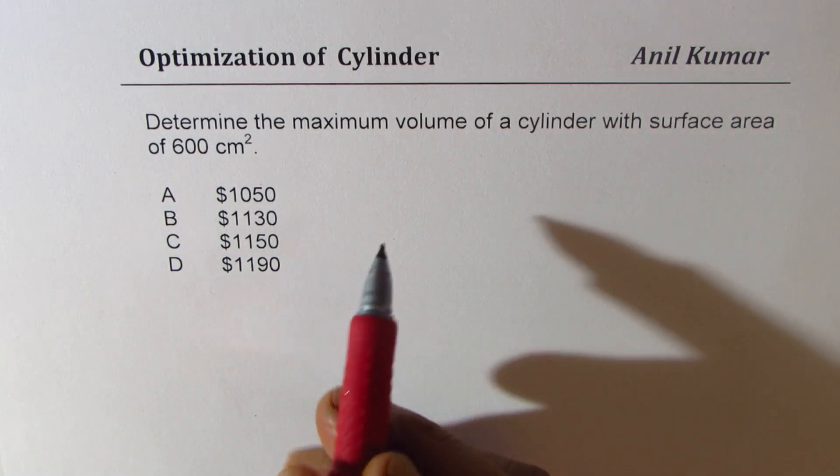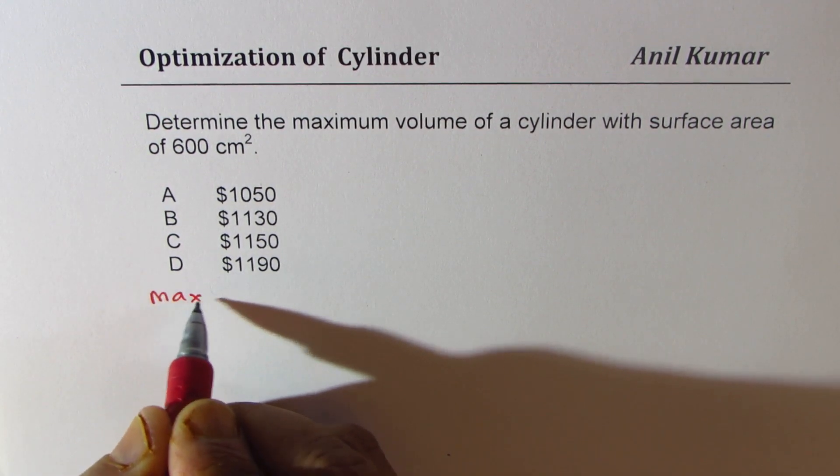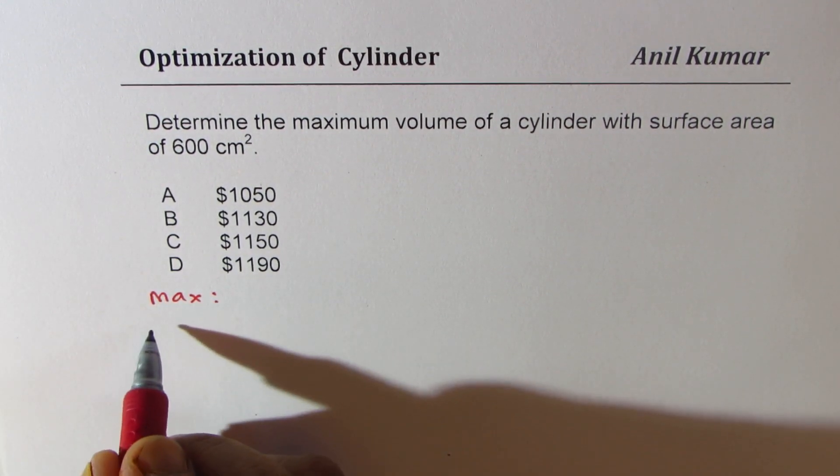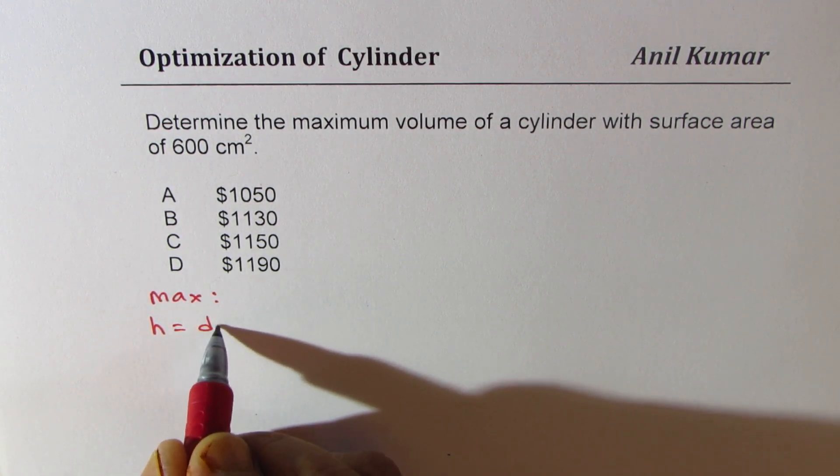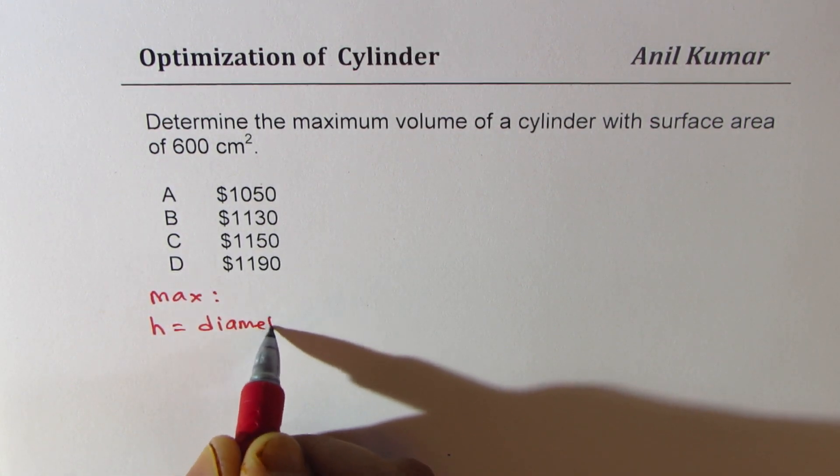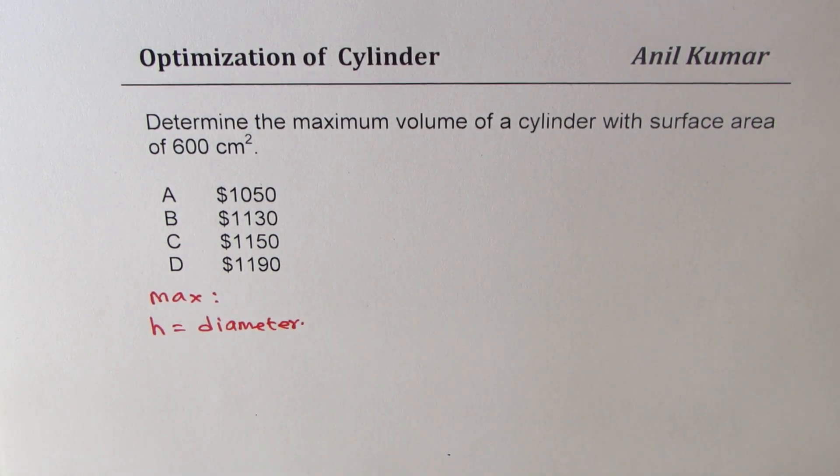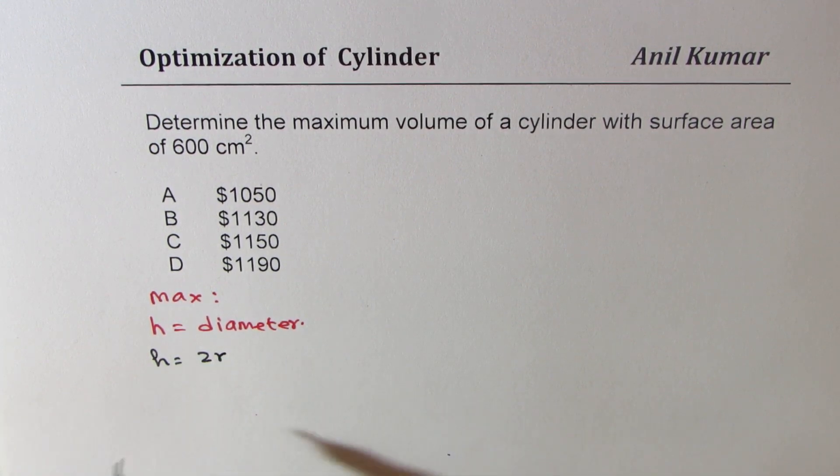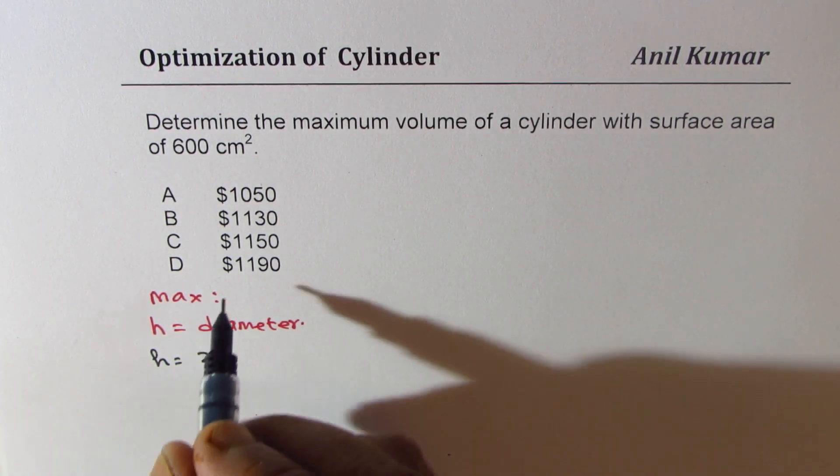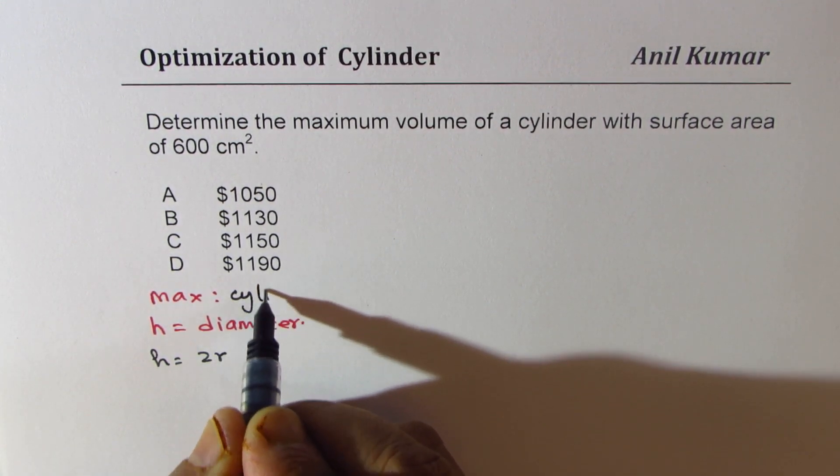You should remember that maximum volume will be when height is equal to diameter. That is to say, when height is twice radius in case of cylinders.